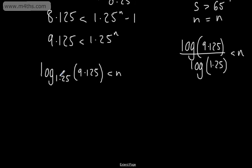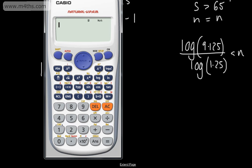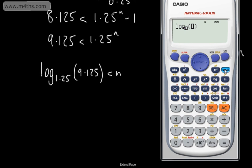It's asking me the power of 1.25 is raised by to get 9.125. Quite clearly, no issues with negativity and requiring the inequality sign to change. So, let's do that. Base now 1.25, and then we're going to have 9.125, and that's going to give us 9.9085.